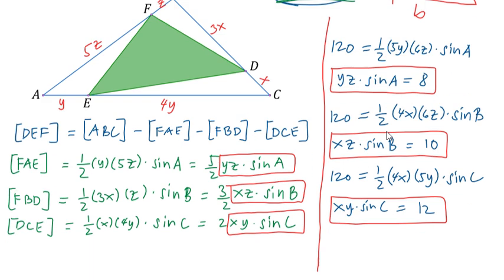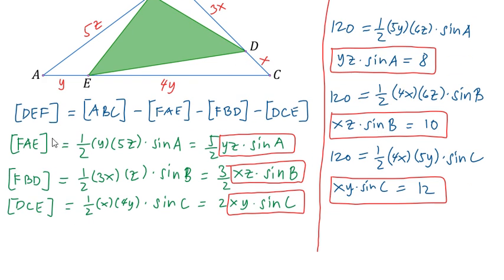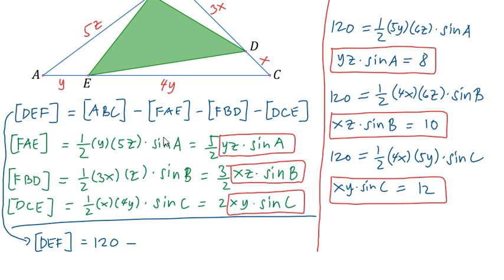Now, let's substitute these values here to solve for the area of triangle DEF. The area of triangle DEF is equal to the area of triangle ABC which is 120 cm² minus the area of FAE. Take note we have 5 over 2 times the value of YZ sine A that's 8, minus 3 over 2 times the value of XZ sine B which is 10, minus 2 times the value of XY sine C which is 12.